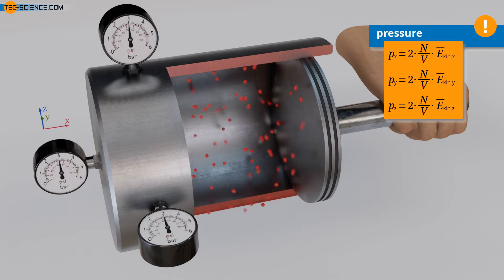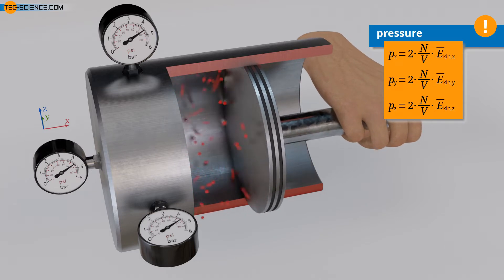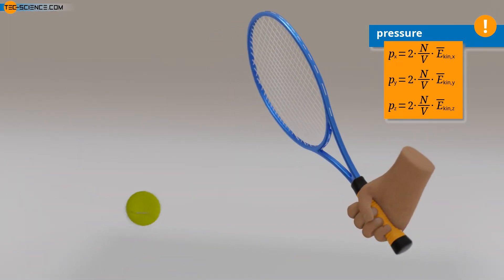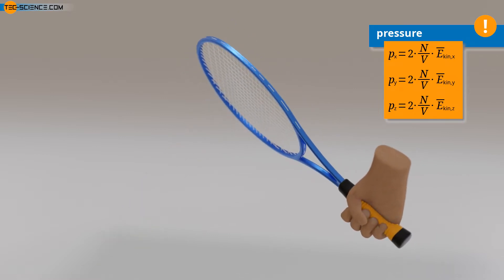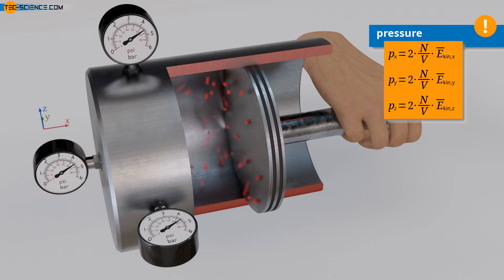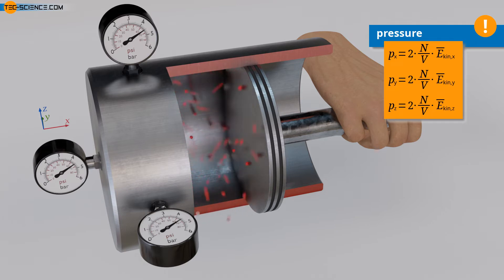When the gas in the cylinder is compressed by pushing the piston inward, the moving piston hits the oncoming molecules with force. On a microscopic level, this is similar to hitting an oncoming ball with a racket. The moving piston thus increases the speed of the molecules in the x-direction, which also increases the mean kinetic energy related to the x-direction. Consequently, one might expect the compression to only increase the pressure in the x-direction, leaving pressures in the y and z directions unaffected.